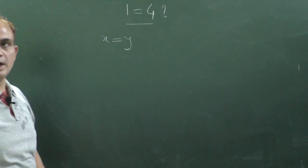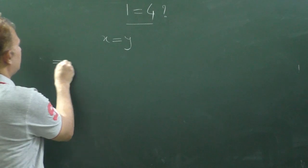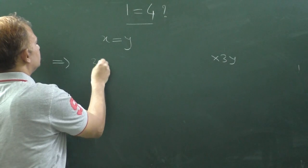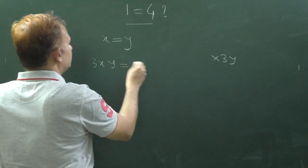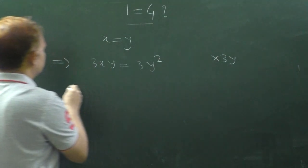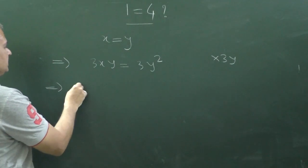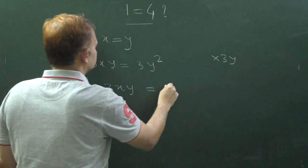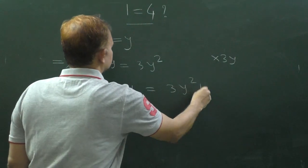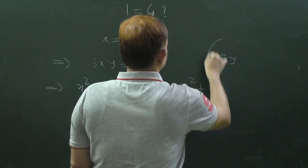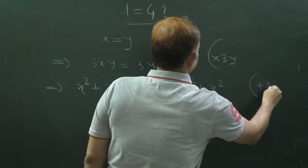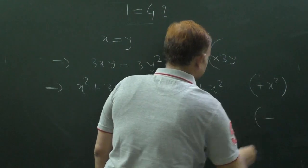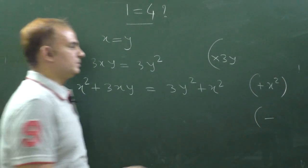X is equal to Y. Multiplying both the sides by 3Y, so it becomes 3XY is equal to 3Y square. Adding both the sides by X square, subtracting 4Y square from both sides.